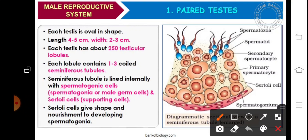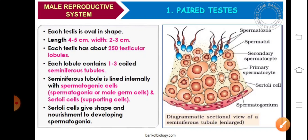Each testis is oval in shape. When we talk about the length, it is 4 to 5 centimetres and width is 2 to 3 centimetres. In human male, there is a pair of testis. Each testis comprises of about 250 testicular lobules, and each lobule contains 1 to 3 coiled seminiferous tubules. Thus, the total number of seminiferous tubules in each testis is 750 to 1,000.